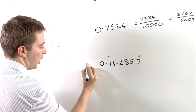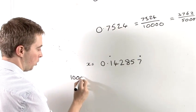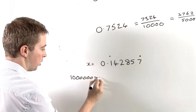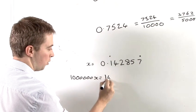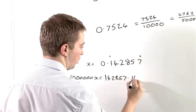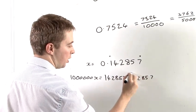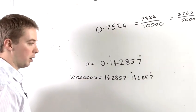So we're going to call this number here x and we're going to say 1,000,000 times x is equal to 142857.142857. And again this recurs over and over again.